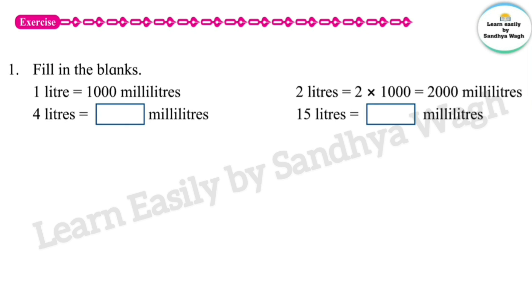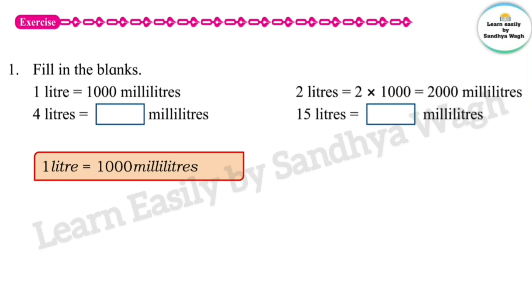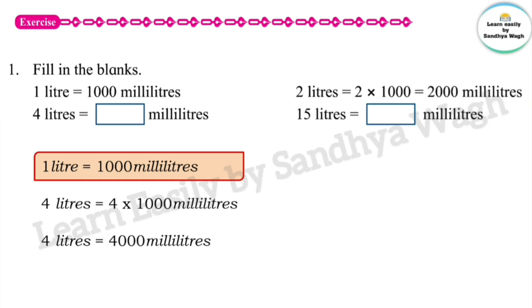Then four litres is equal to how many millilitres? One litre is equal to 1000 millilitres, so for four litres we multiply 4 by 1000 millilitres. The answer is 4000 millilitres. So, four litres is equal to 4000 millilitres.